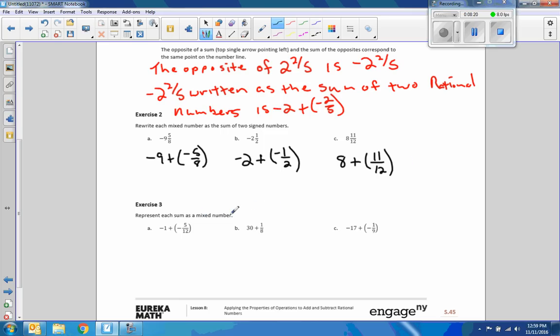Represent each sum as a mixed number. So now we have an integer and a rational number. We're going to add them and get a mixed number. So negative 1 plus negative 5 twelfths. Since they're both negative, my answer is going to be negative, so I'm going to add them and keep the sum. So negative 1 and 5 twelfths. 30 plus an eighth is simply 30 and 1 eighth. And negative 17 plus negative 1 ninth makes the number negative 17 and 1 ninth.